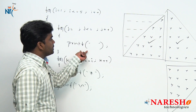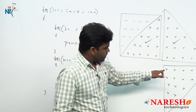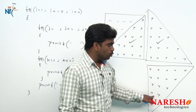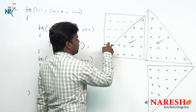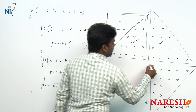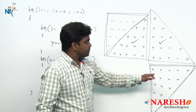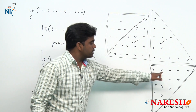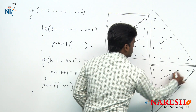Now we need the spaces logic. How to print spaces? Look at this: 5 stars, 4, 3, 2, 1 — and look at the spaces: 4, 3, 2, 1, 0. These two patterns look the same. The only difference is here we are printing stars, and here we are printing spaces. So these two logics are the same.